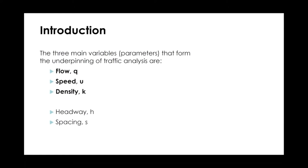There are three main variables that form the basics of traffic analysis. The first is flow, Q. The second is speed, usually represented as U or V for velocity. The third is density, represented as K. There are also two secondary variables: headway, H, and spacing, S.